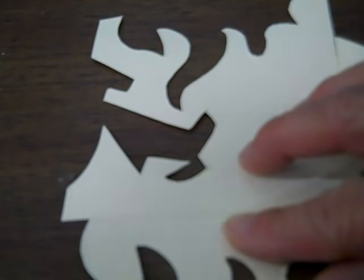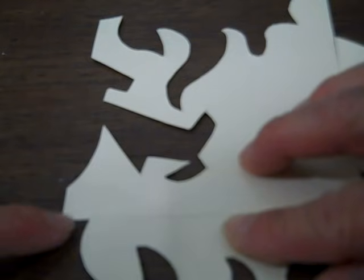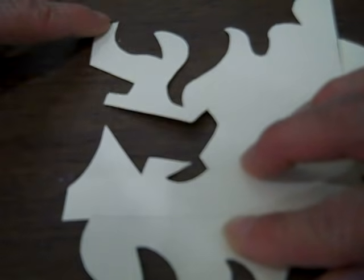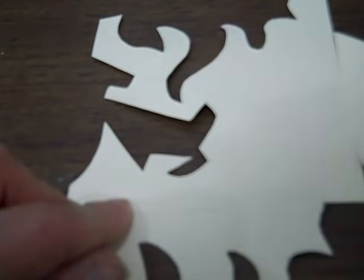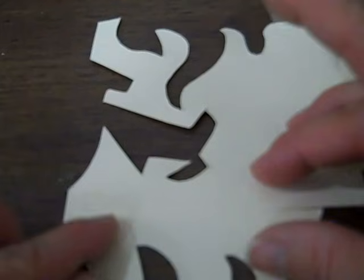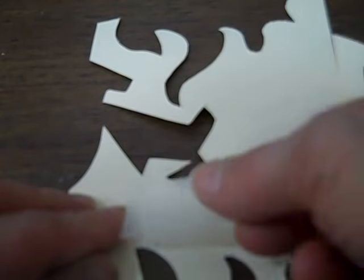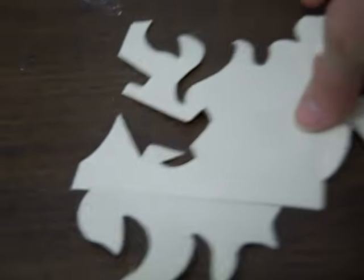If these are off a little bit and this space here does not equal this space here, you're not going to have a very clean tessellation. Then when you are sure that you have these lined up, you're going to tape it.